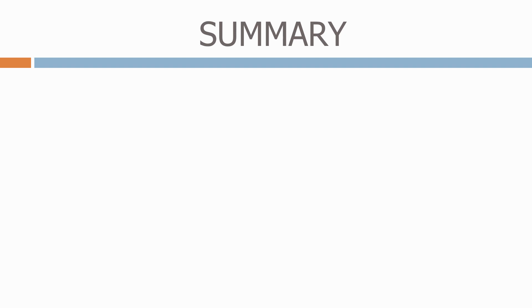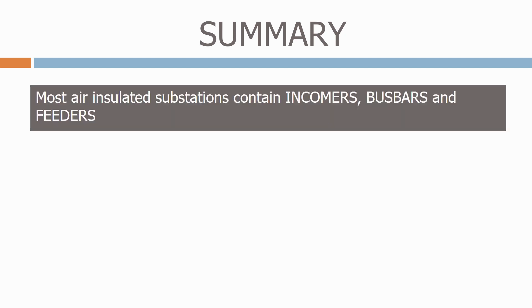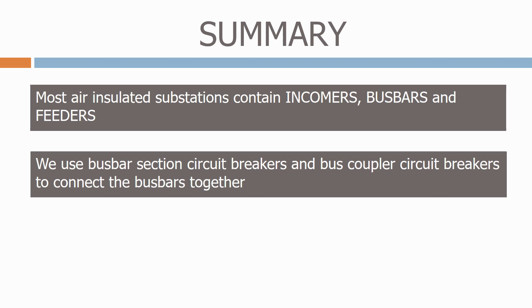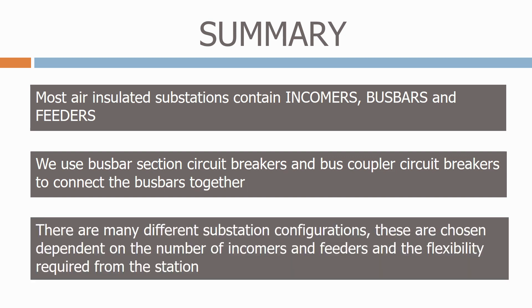To summarise what we've learned today: most air-insulated substations contain incomers, bus bars and feeders. We use bus section circuit breakers and bus coupler circuit breakers to connect the bus bars together. There are many different substation configurations, chosen depending on the number of incomers and feeders and the flexibility required from the station.